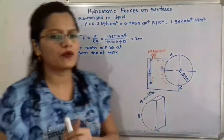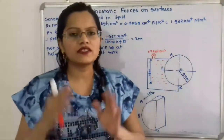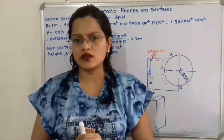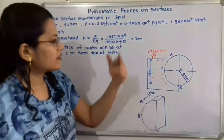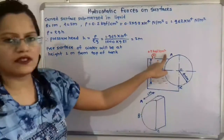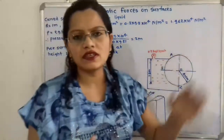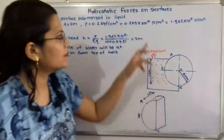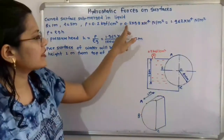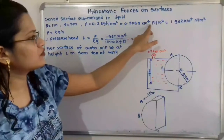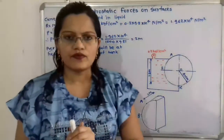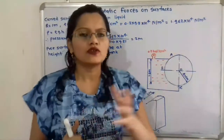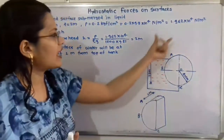We also need to convert centimeter square to meter square: 1 cm² equals 10 raise to minus 4 m². Since centimeter square is in the denominator, shifting it gives 10 raise to 4 in the numerator. So the converted pressure is 0.2 × 9.81 × 10⁴ Newton per meter square, which equals 1.962 × 10⁴ N/m². This is the pressure on the tank we will use going forward.